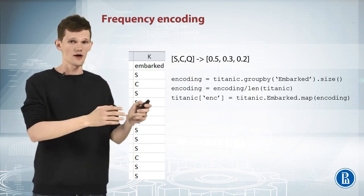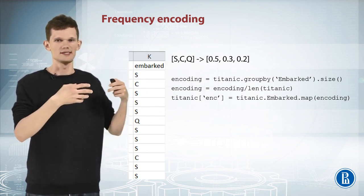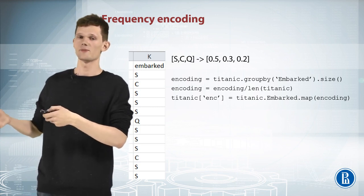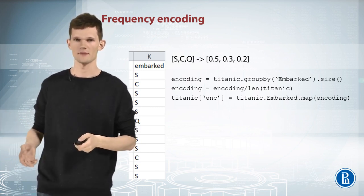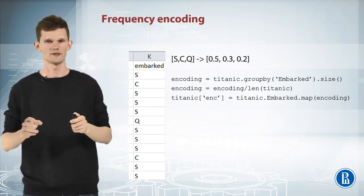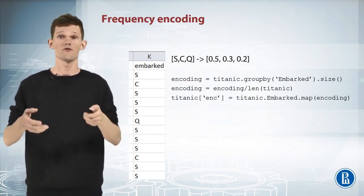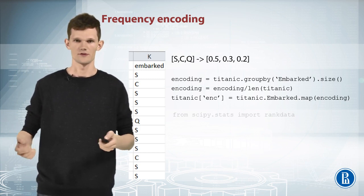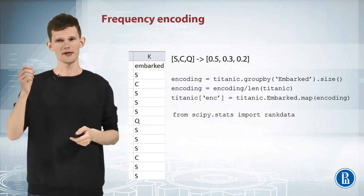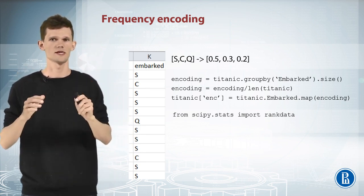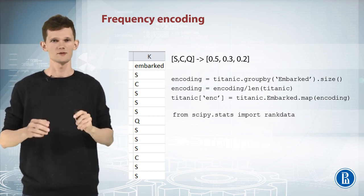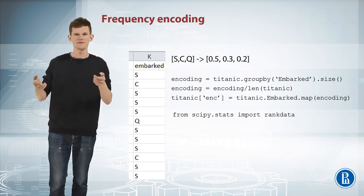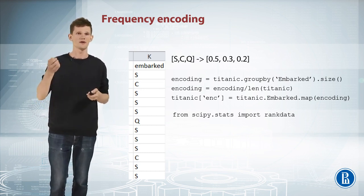First ones can find this feature useful if value frequency is correlated with target value, while the second ones can have less number of split values because of the same reason. There is another important moment about frequency encoding. If we have multiple categories with the same frequency, they won't be distinguishable in this new feature. We might apply a rank operation here in order to deal with such ties.